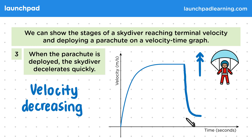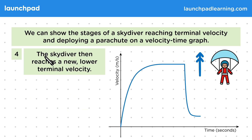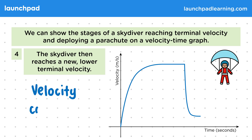The fact that the curve is levelling off probably makes it easier to guess what comes next. The skydiver then reaches a new lower terminal velocity. Eventually the air resistance will decrease to the point where it balances the weight again, so there's no longer any acceleration and the velocity will be constant. So we draw another horizontal line, this time much lower than the terminal velocity we had before.